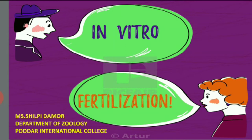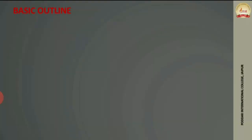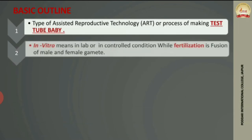In this video lecture we are going to discuss in vitro fertilization. There are two basic terms: in vitro, which means carrying out a natural process in the lab, and fertilization, which means fusion of male and female gametes. This is a kind of assisted reproductive technology, also called the test tube baby process.